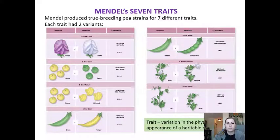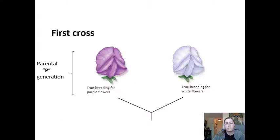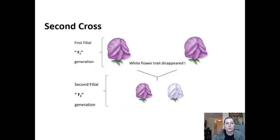With these pea plants, Mendel looked at seven different traits: flower color, seed color, seed texture, pod color, pod shape, flower position, and plant height — each with one or the other characteristics, such as purple or white flowers, yellow or green seeds, or round or wrinkled seeds. In his first cross, he crossed two true-breeding strains — a purple flower plant and a white flower plant — and all resulting offspring were purple. The white characteristic had completely disappeared.